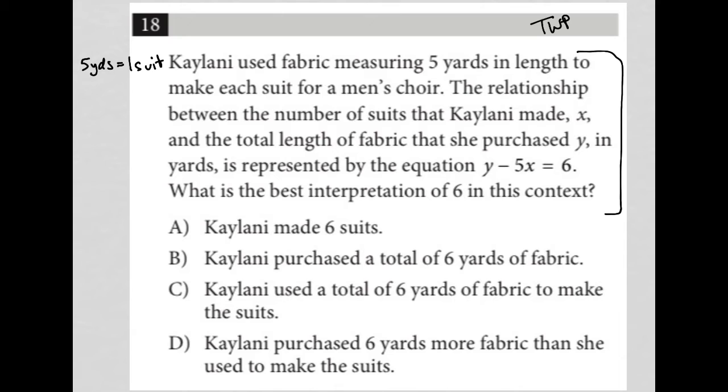The relationship between the number of suits that Kehlani made, x, and the total length of fabric that she purchased, y, in yards, is represented by the equation y minus 5x equals 6. So I'll write that down. y minus 5x equals 6, where x is the number of suits that Kehlani made. I'm going to just underline that. Number of suits made is x. The total length is y.